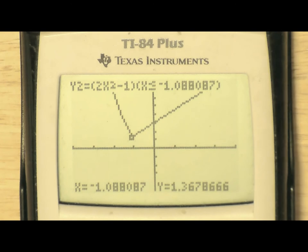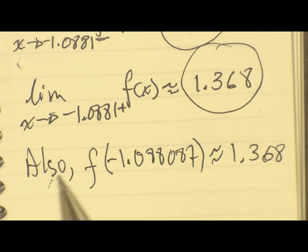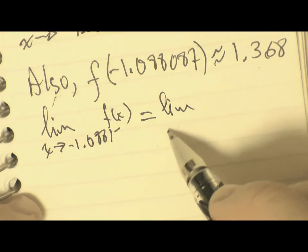Second, trace, and then negative 1.088087, and then enter, the result is just about 1.368, which is consistent with our limit.